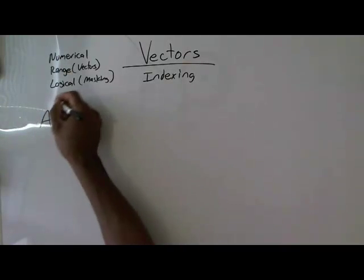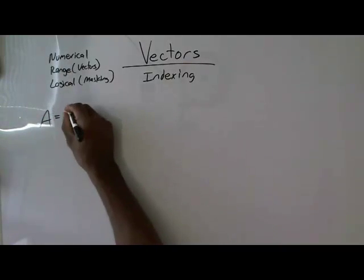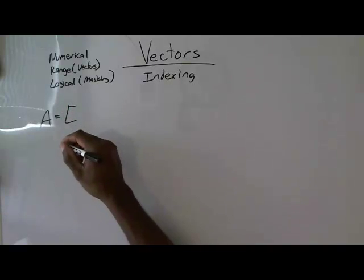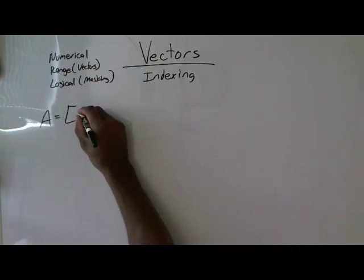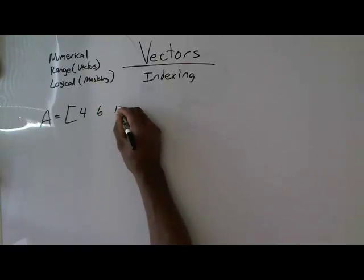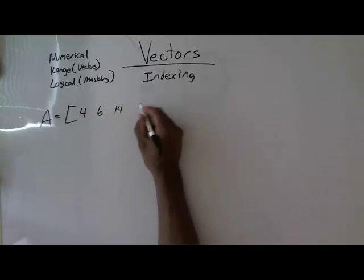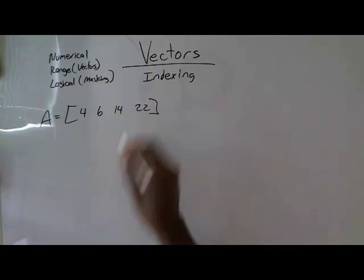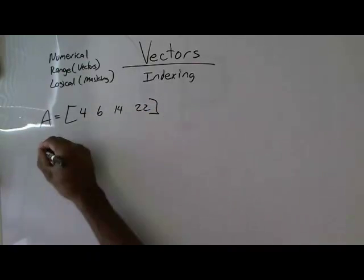So if we did vector A equals, let's say, 4, 6, 14, and 22, and I come in here and I say, okay,